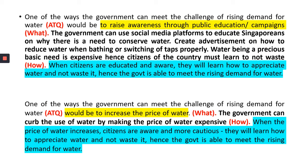Another example — even though in N-Level you're just supposed to give one strategy, if you have time or you're not confident of your first answer, you can write another example of what the government could do. Besides raising awareness, the government could use their capacity to come up with a bolder, harder strategy: increase the price of water, a more perhaps harsher strategy. When we make the price of water expensive, people are more cautious, they learn not to waste it, and the government is able to meet the rising demand because there is at least adequate supply.